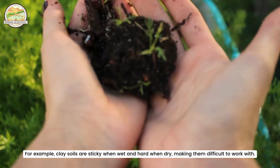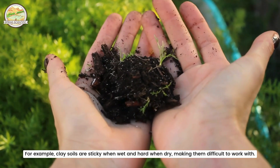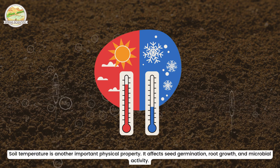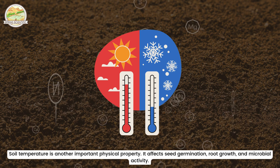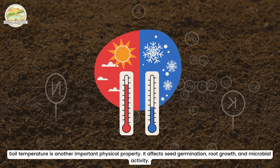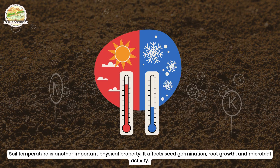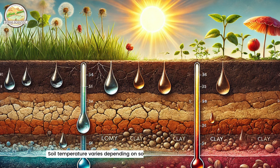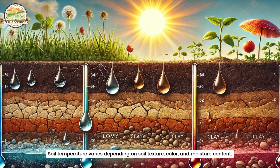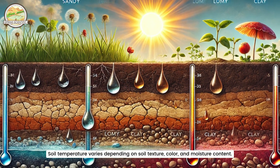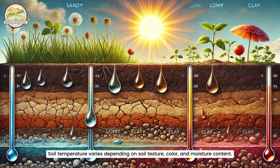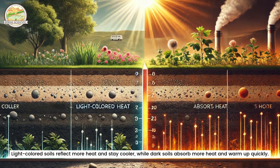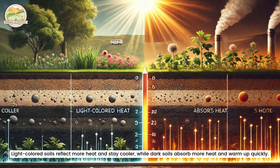Soil temperature is another important physical property. It affects seed germination, root growth and microbial activity. Soil temperature varies depending on soil texture, color and moisture content. Light colored soils reflect more heat and stay cooler, while dark soils absorb more heat and warm up quickly.